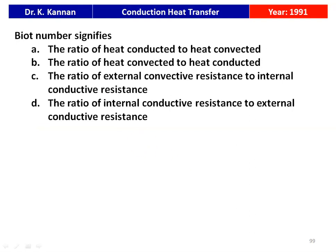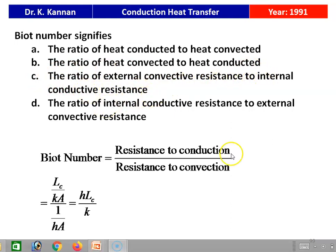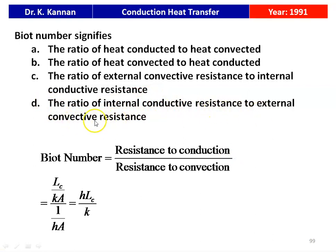Next question (1991): Biot number signifies the ratio of internal conductive resistance to external convective resistance. Biot number = (LC/KA)/(1/HA) = HLC/K. This is the definition of the Biot number: resistance to conduction divided by resistance to convection. The answer is option D: ratio of internal conductive resistance to external convective resistance. The lumped parameter method applies when the Biot number is very low, meaning the material has very high thermal conductivity.